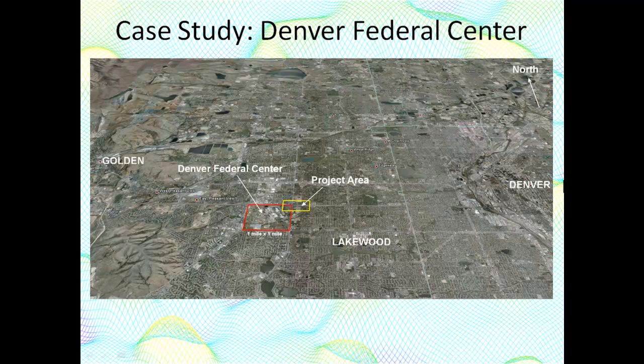The Denver Federal Center lies midway between Denver and Golden in Colorado. This one-by-one-mile site, shown by the red boundary, includes large offices for the BLM, USGS, IRS, EPA, GSA, and other federal agencies.